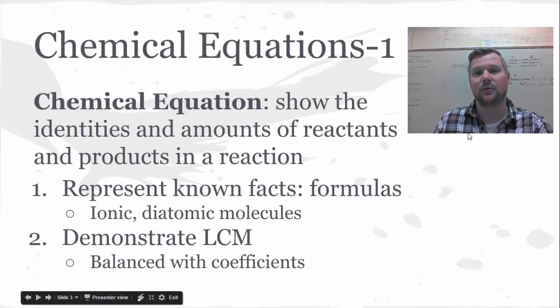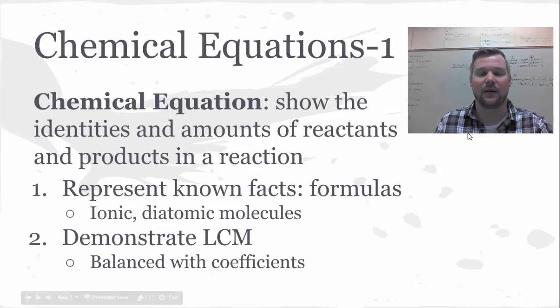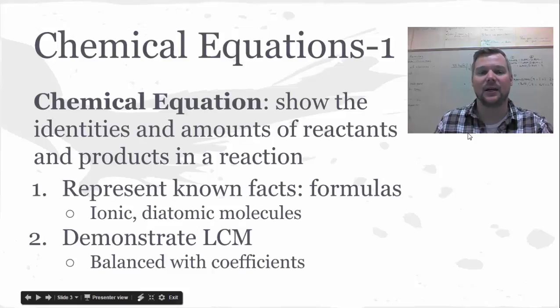Now we represent a chemical reaction using chemical equations and these are going to show everything that's true about the reaction that we happen to know. The identities and the amounts of reactants. When we're talking about the reactants we need to make sure that the reactants are correct. The formulas have to be drawn correctly making sure that ionic formulas have charges that cancel and that covalent formulas follow whatever we happen to know about the elements in those covalent formulas and then of course diatomic molecules which we in our class use Hunklebrief, H-O-N-C-L-B-R-I and F always come elementally as a pair.